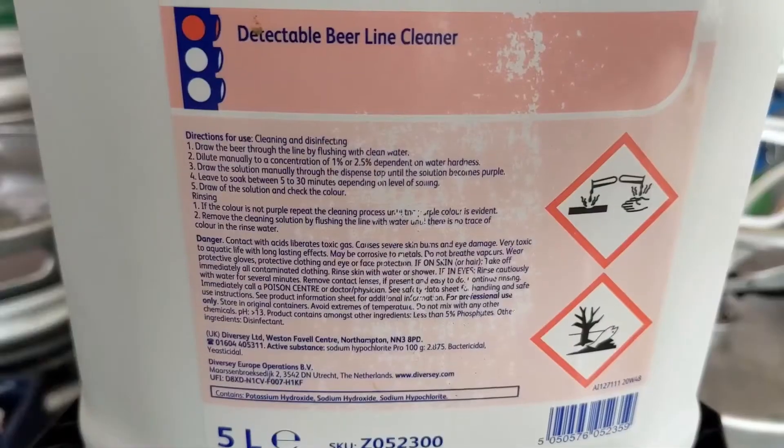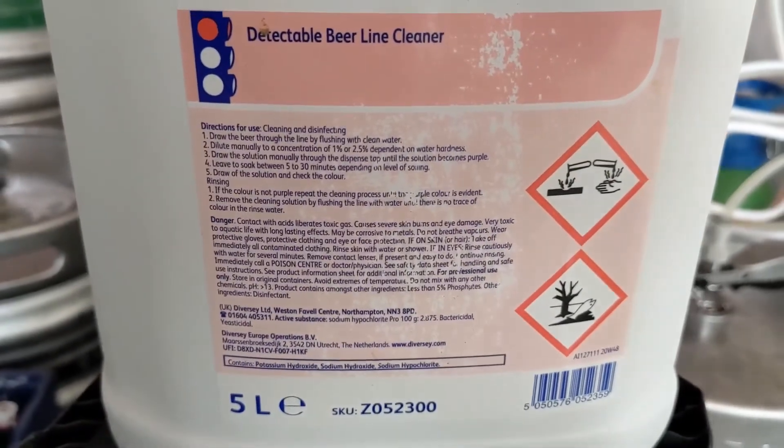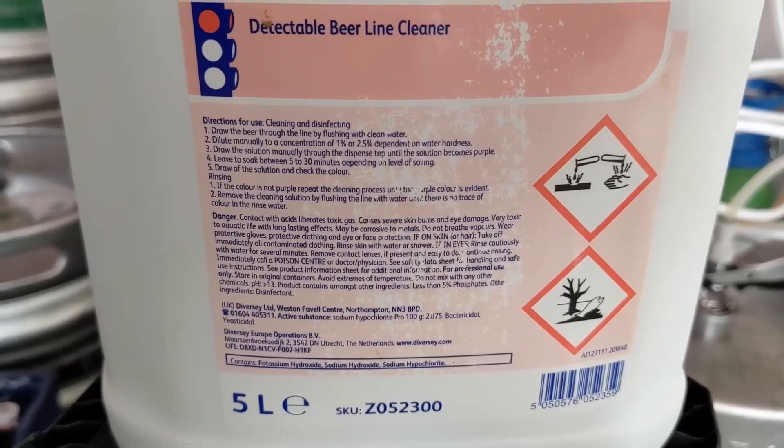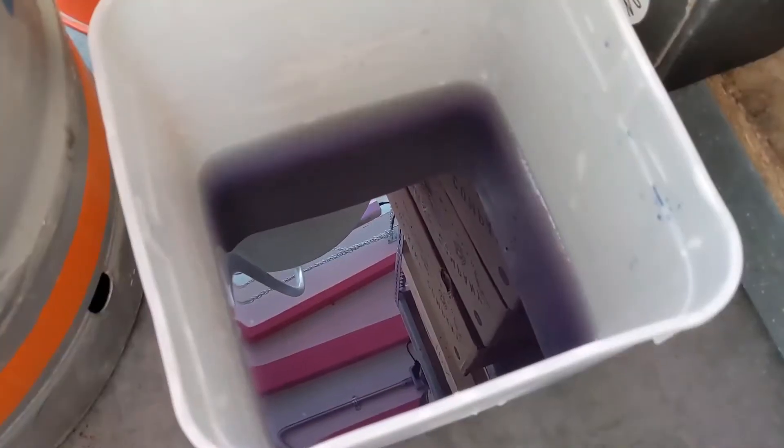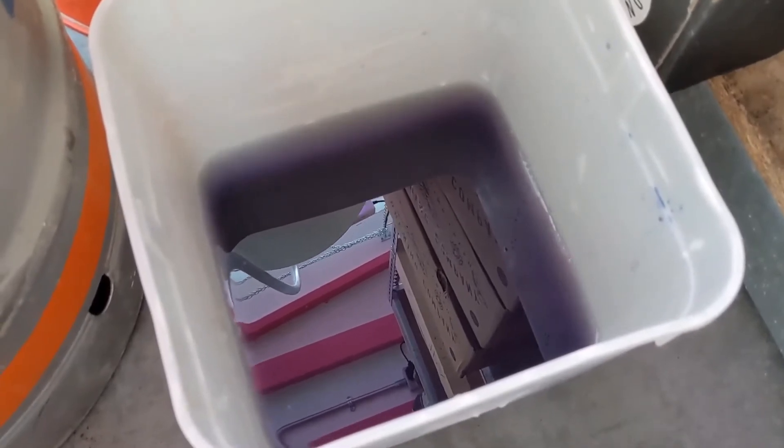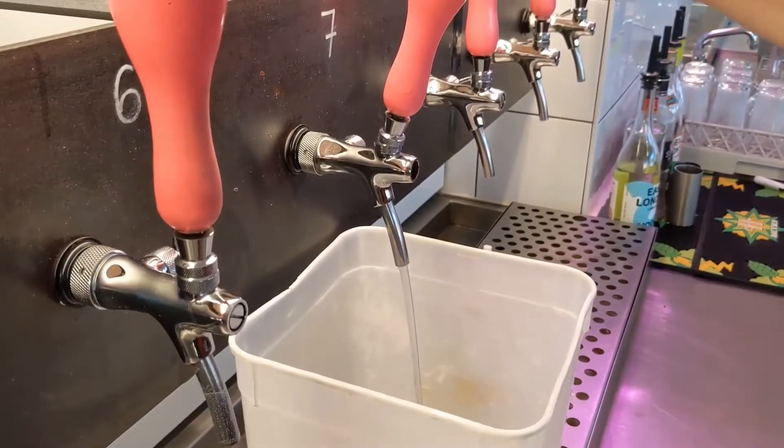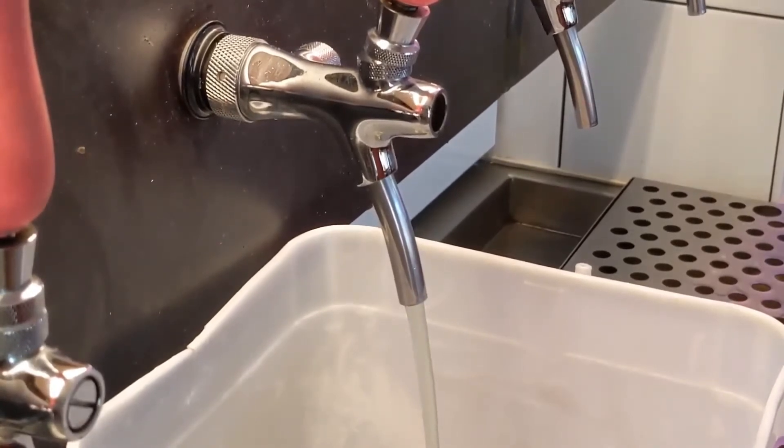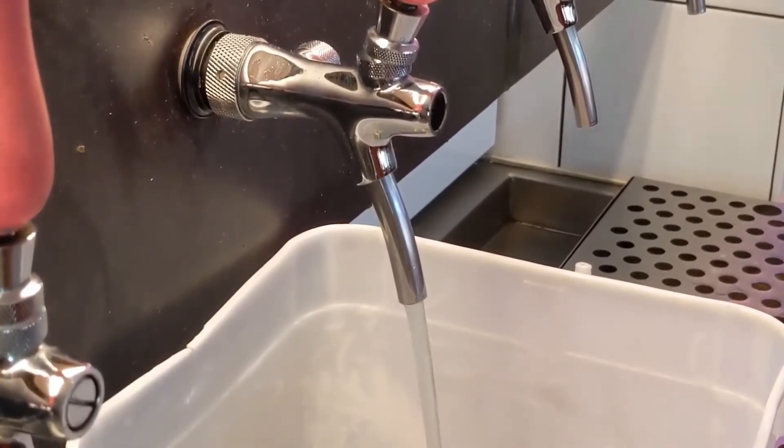Next, you will follow the instructions on the beer cleaning fluid. This is Detectable Beer Line Cleaner. Now change from water to the cleaning bucket and pour through until you see the cleaning fluid in the line.